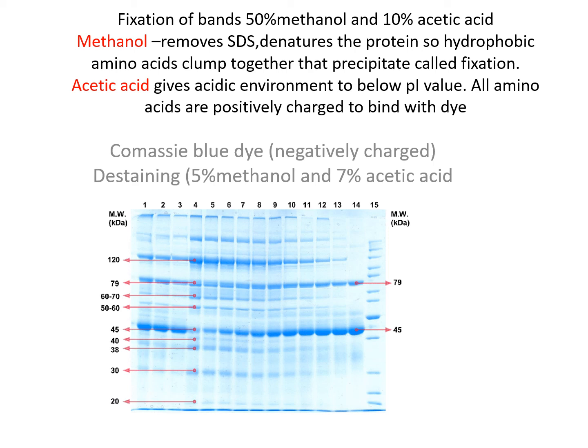Acetic acid provides an acidic environment for the protein, so all proteins go below their pI value and become positively charged, meaning they bind easily with Coomassie blue dye, which is negatively charged. After staining with Coomassie blue dye, destaining is performed to see the bands. For destaining, 5% methanol and 7% acetic acid is used — acetic acid fixes the bands and methanol removes the unbound dye from the gel.